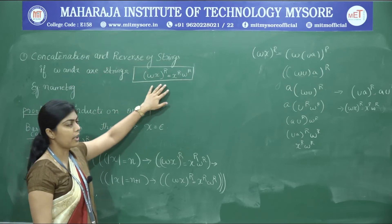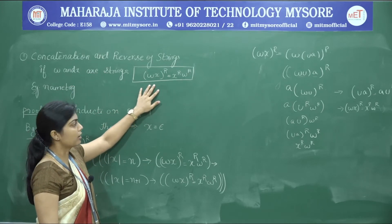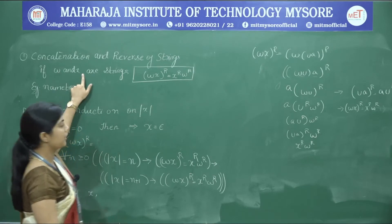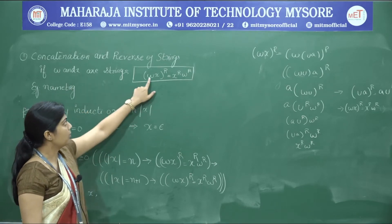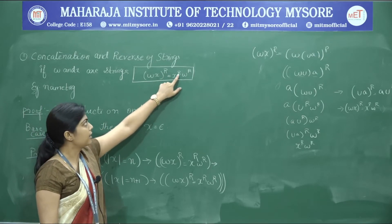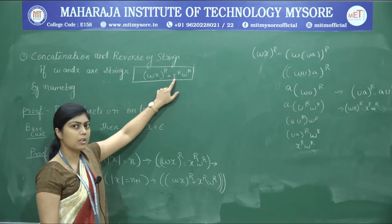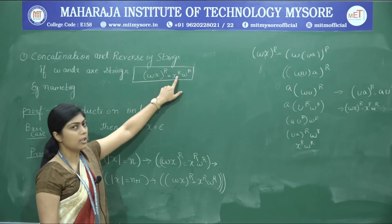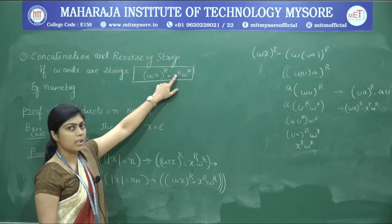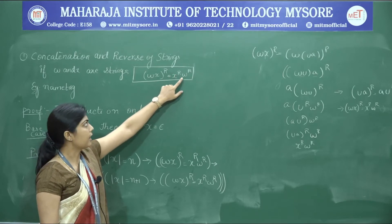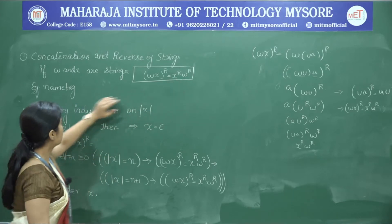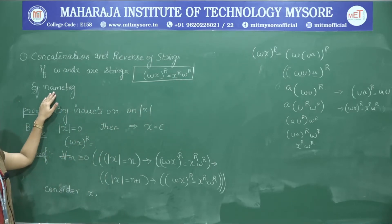The theorem on concatenation and reverse of strings states: if w and x are two different strings, then (w concatenated with x) reversed is equal to x-reverse concatenated with w-reverse. That is, the reverse is applied on the individual strings x and w, but in the reverse order.